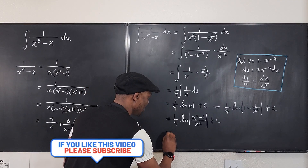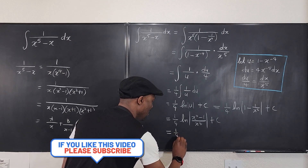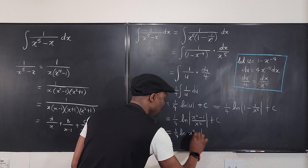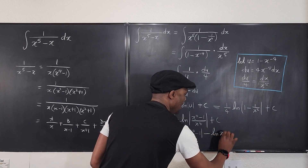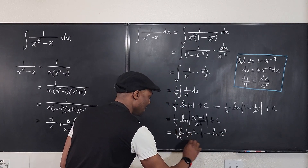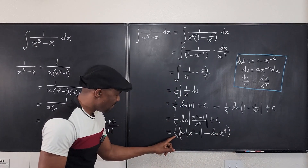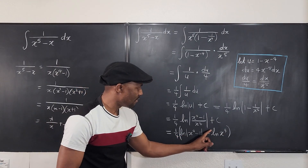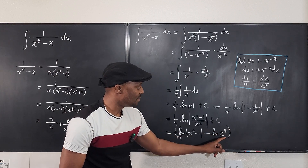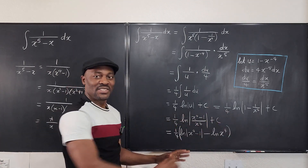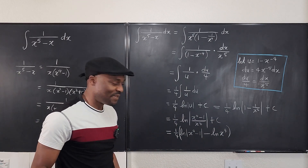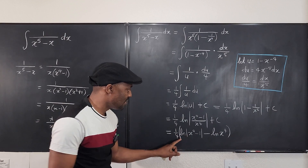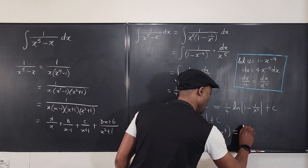We can still split this further — 1 over 4 times the natural log of x to the fourth minus 1, minus the natural log of x to the fourth. If you distribute the 1 over 4 to each term, you can move it inside as a root — it becomes the fourth root. So each of these lines is a correct answer, but the nicest is to apply this 1/4 as a root to each term.